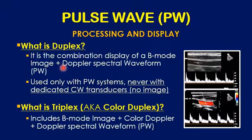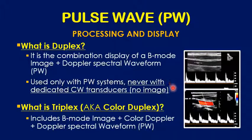When color is applied to the image along with the spectral waveform, this is called triplex imaging — or sometimes color duplex. So duplex means B-mode image with the spectral waveform, while triplex means B-mode with color and the spectral waveform.